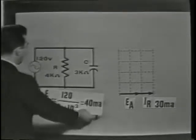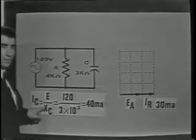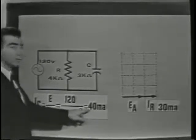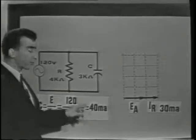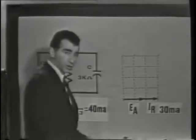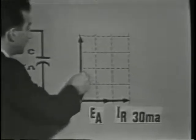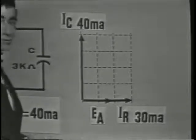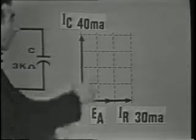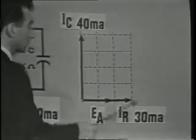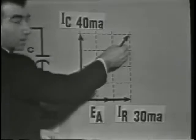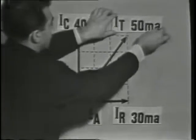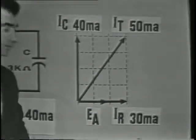IC is equal to the voltage over the capacitive reactance: 120 volts over 3k ohms equals 40 milliamps. The vector for IC, or our capacitive current, will show 40 milliamps, 90 degrees ahead of EA because the capacitor introduces a phase shift. We can draw our parallelogram and find the approximate total current by simply measuring the length of the resultant vector. In this case, the resultant vector would be 50 milliamps, or IT is 50 milliamps.